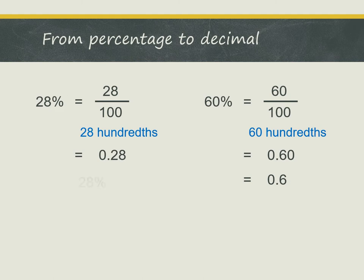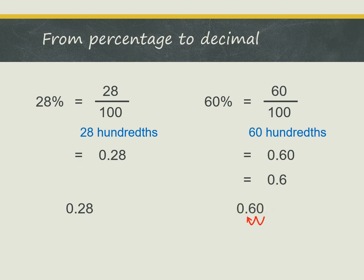Now just like the shortcut earlier, we have a shortcut for this. Let's look at 28%. We can move the decimal point two places to the left, and we get the answer 0.28. Now let's look at 60%. In the same way, we can move the decimal point two places to the left, and we get the answer 0.6. This is how to convert from a percentage to a decimal.